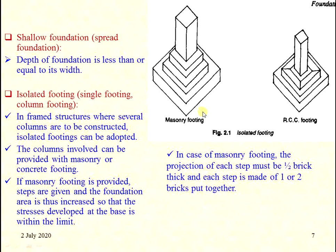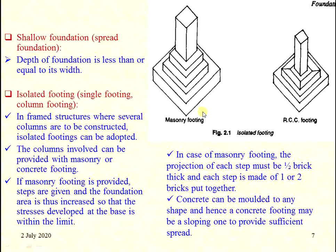In the case of masonry footing, the projection steps must be half-brick thick and each step made of one or two bricks put together. Concrete can be molded into any shape, so concrete footing may be sloping to provide sufficient spreading.